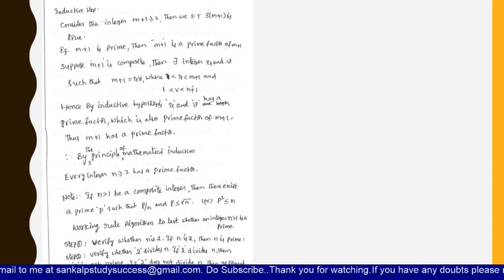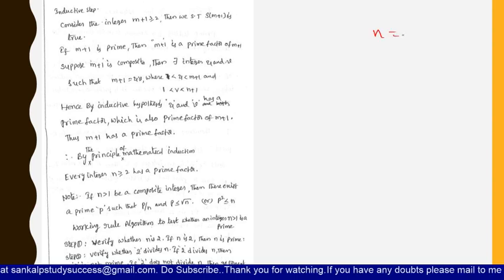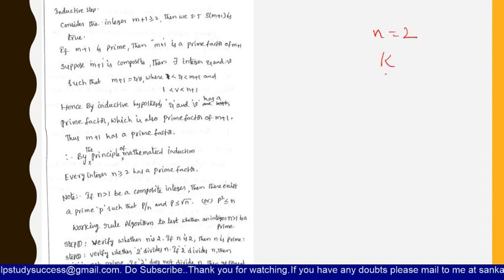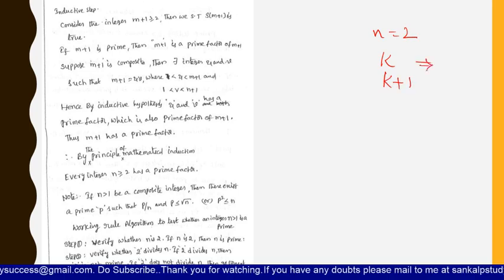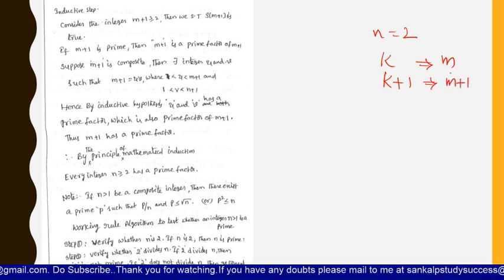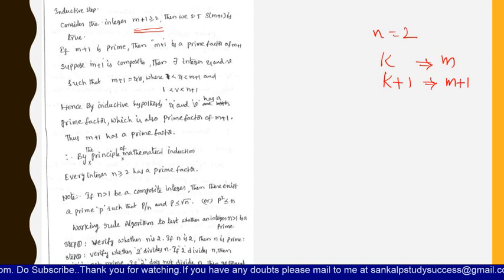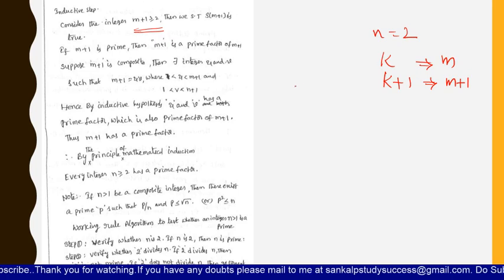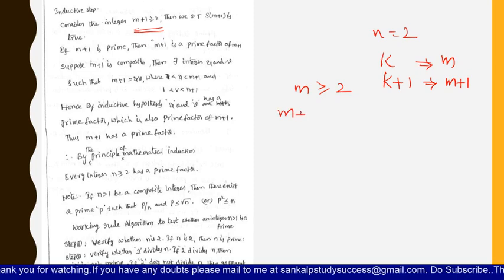According to mathematical induction, we prove the first step for n equals 2, then we prove it for k and also k plus 1. Here k is nothing but m, which we have already proved. Now we will prove it for m plus 1. Consider m plus 1 is greater than or equal to 2 — in each step we consider greater than or equal to 2.